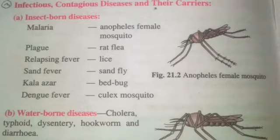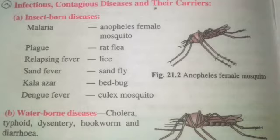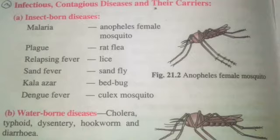The next one is sand fever, or sleeping sickness, in which the patient always sleeps and is not able to work. This is spread by the sand fly, similar to a normal house fly. The next one is Kala Azar, in which the body becomes dark, there is very high fever, joint pain, and headache, and the patient is not able to move their body from the bed.